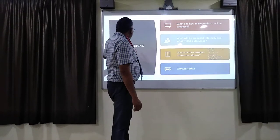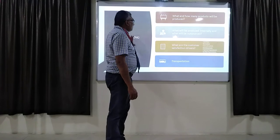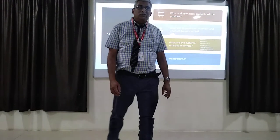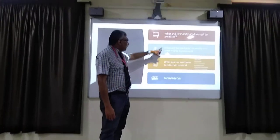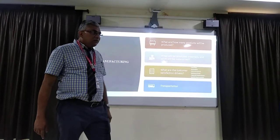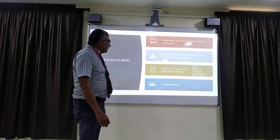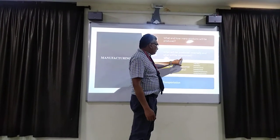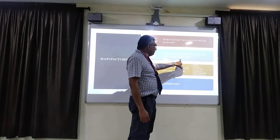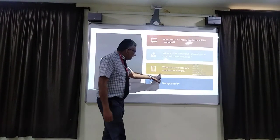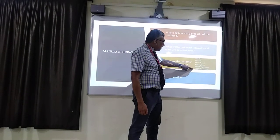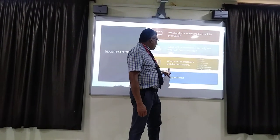For manufacturing, you need to determine how many products will be produced per day or per month — this requires a plan called production planning and control. Another consideration is what will be produced internally versus outsourced. We have to identify the capacity of the factory; if capacity is not sufficient, some parts will be outsourced to an outside agency when internal resources cannot meet demand. The customer satisfaction drivers are lead time, innovation, work control, inventory, capacity requirements, and quality — these are the important elements of customer satisfaction.